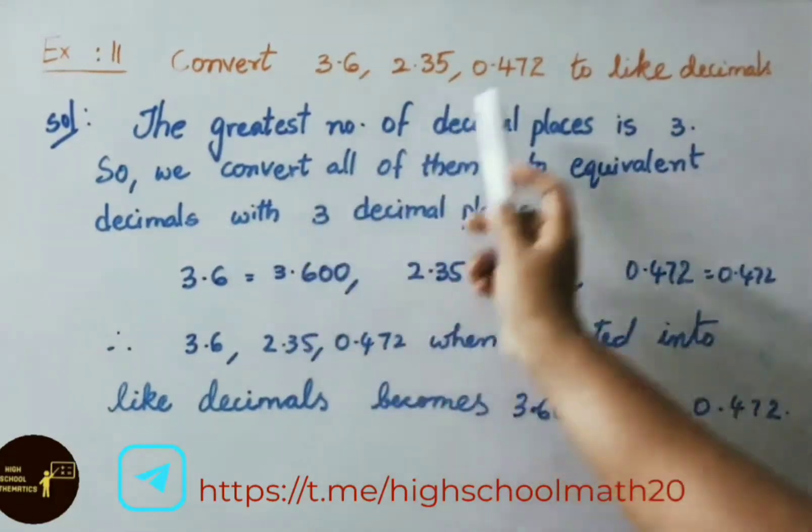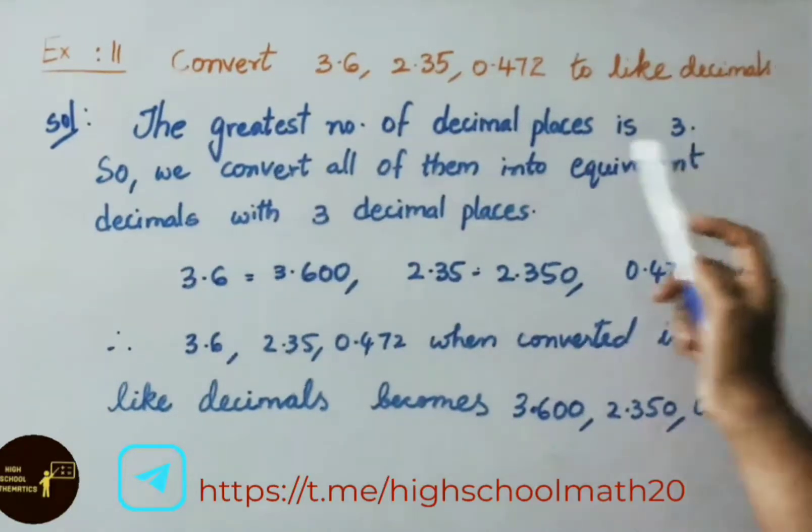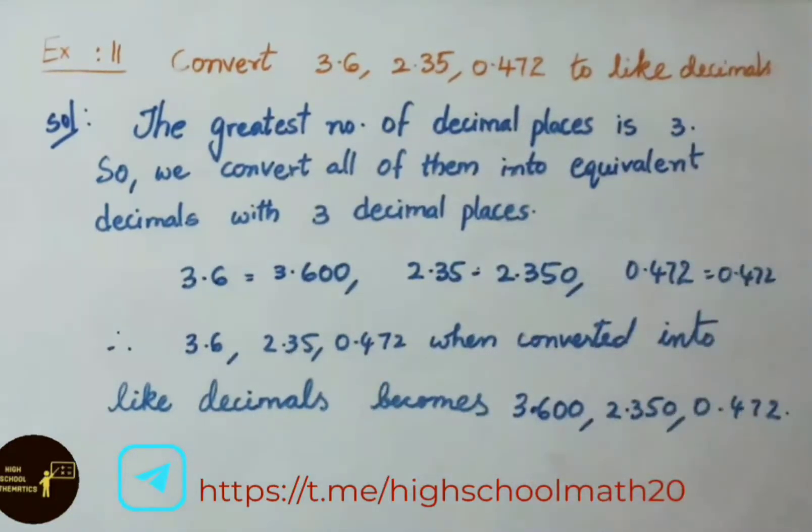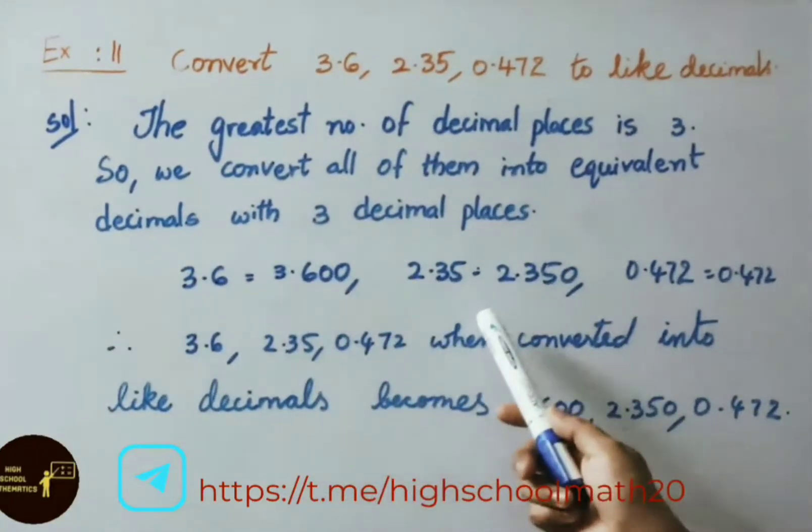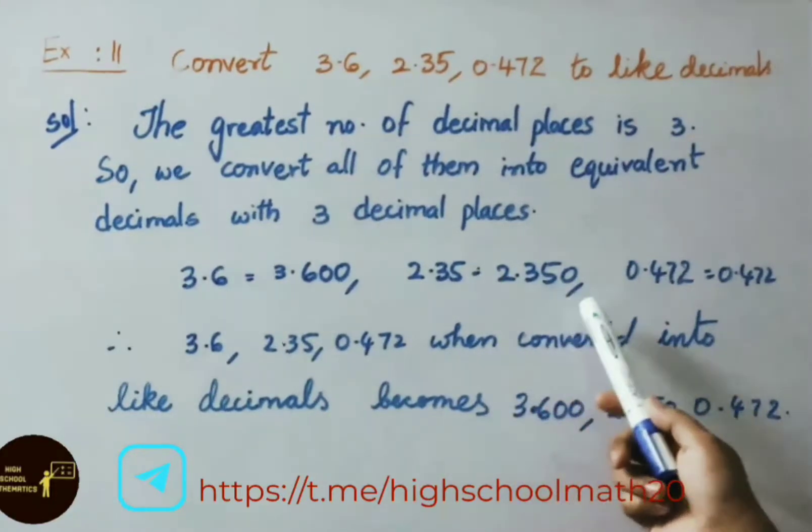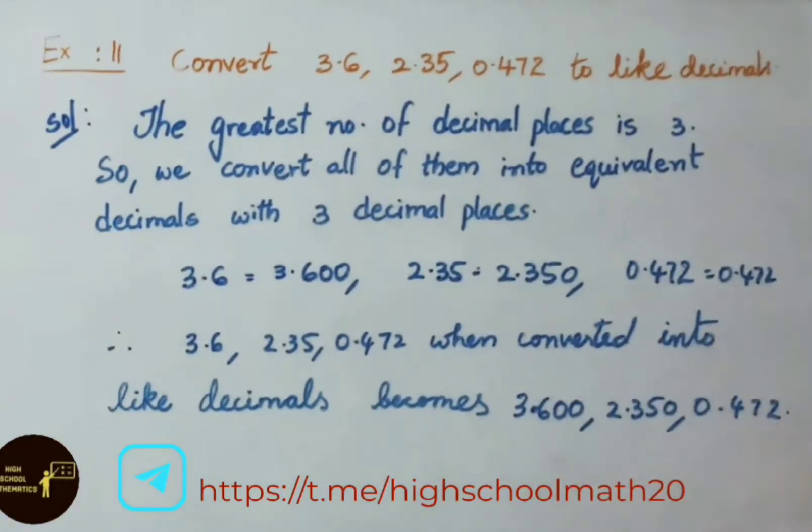So we have to convert all of them into equivalent decimals with three decimal places. So 3.6 equals 3.600, 2.35 as 2.350, 0.472 as it is 0.472. Therefore, 3.6, 2.35, 0.472 when converted into like decimals becomes 3.600, 2.350, 0.472.